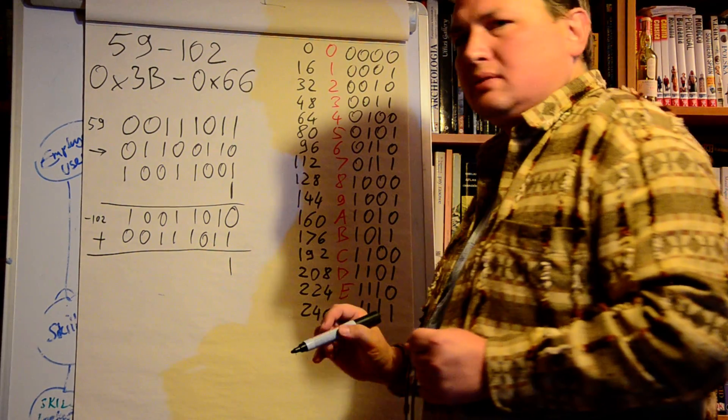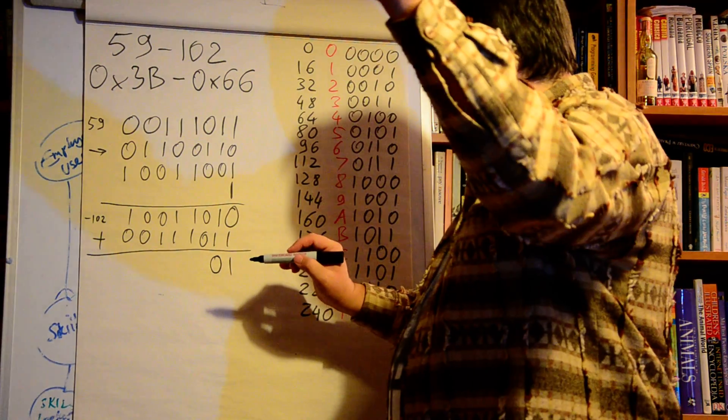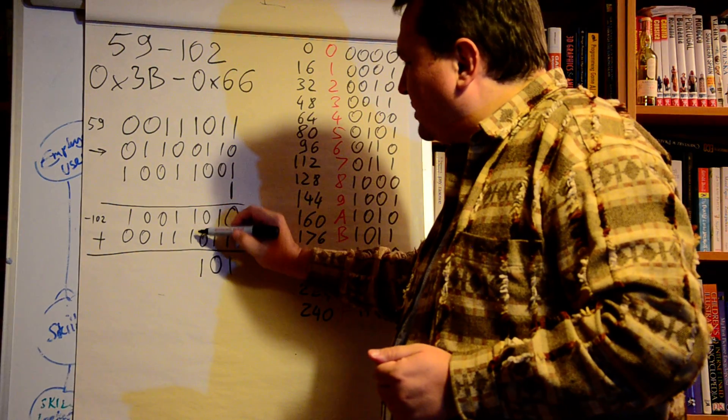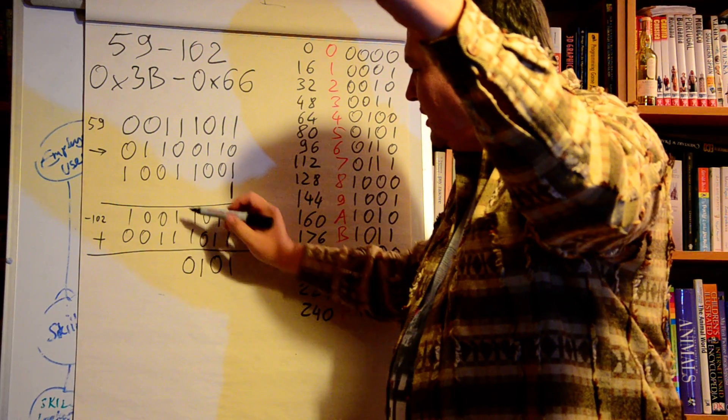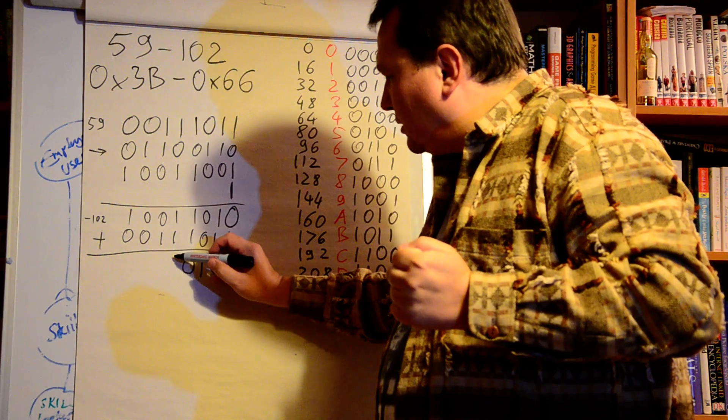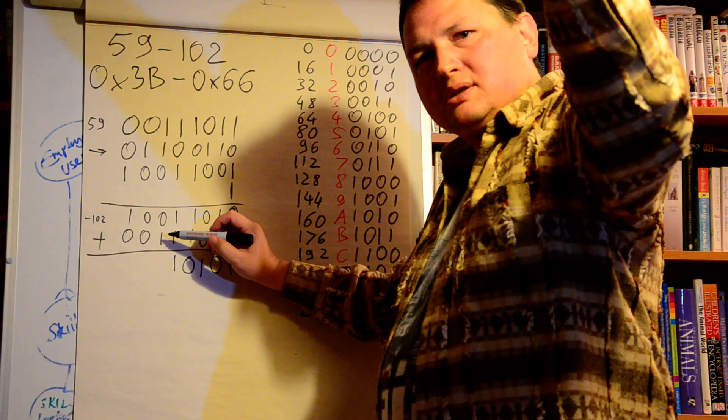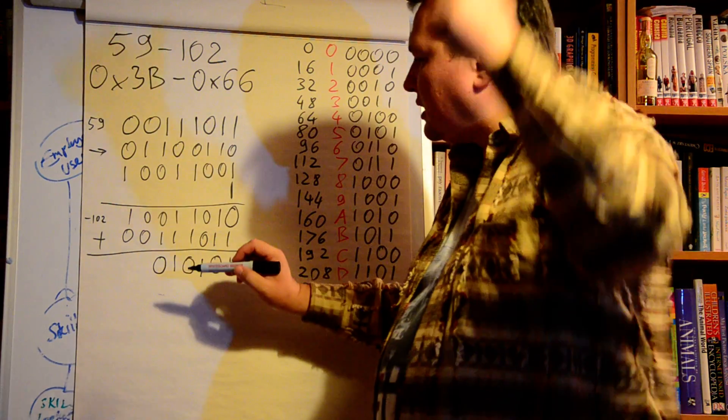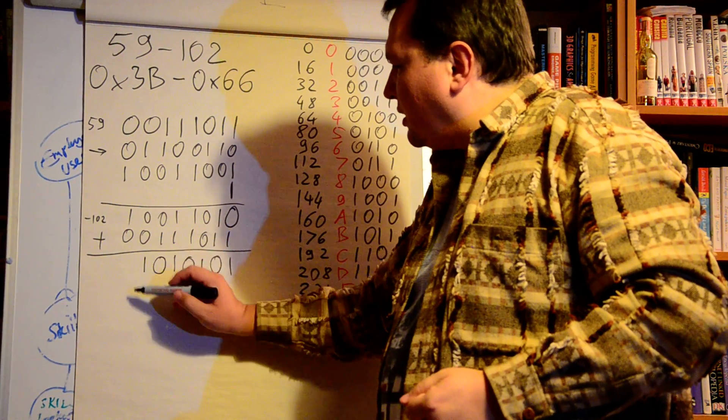Zero plus one is one. One plus one is one zero, so I put zero here and carry one. Zero plus zero is zero, plus carry is one. One plus one is one zero, so I put zero here and carry one. One plus one is one zero, plus carry is one one, so I put one here and carry one. Zero plus one is one, plus carry is one zero. Zero plus zero is zero, plus carry is one. One plus zero is one.